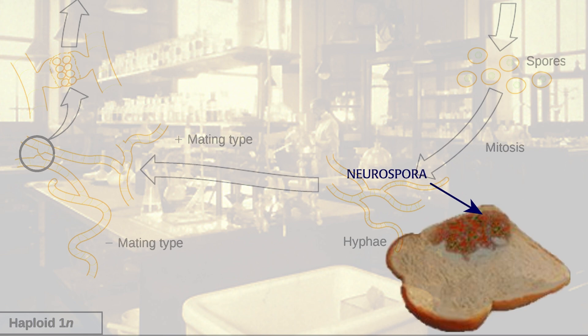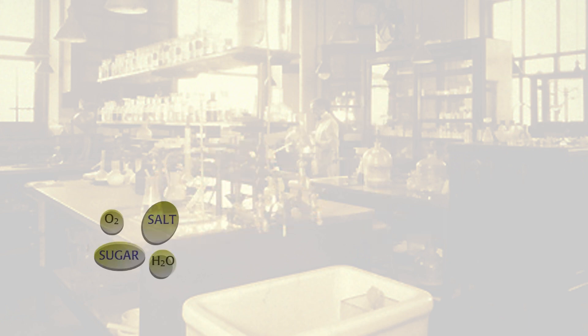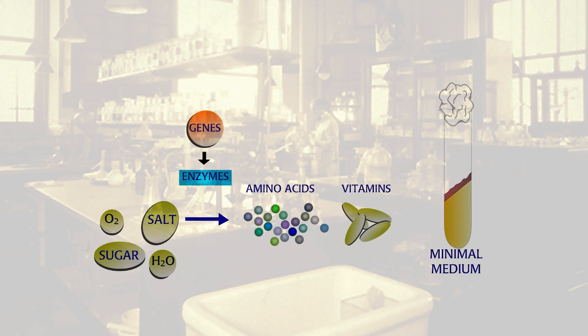In the lab, Neurospora grows well on minimal agar that contains only a few simple sugars, organic salts, and the vitamin biotin. Neurospora have enzymes that convert these simple substances into the amino acids and vitamins necessary for growth.